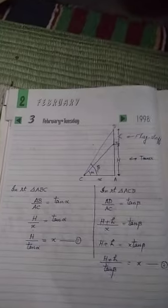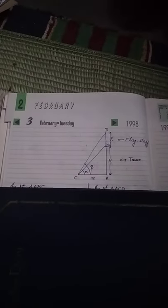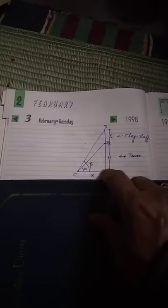Now let us start. First of all, see, AB is the tower and BD is the flagstaff whose height is h. C is a point on the plane.